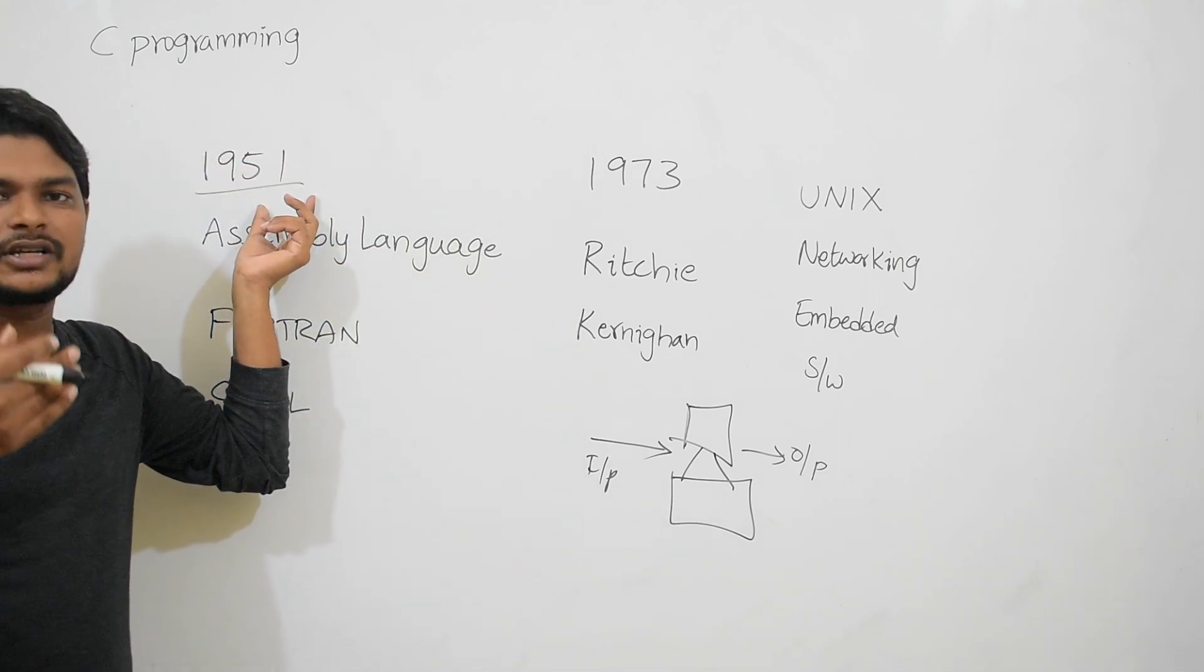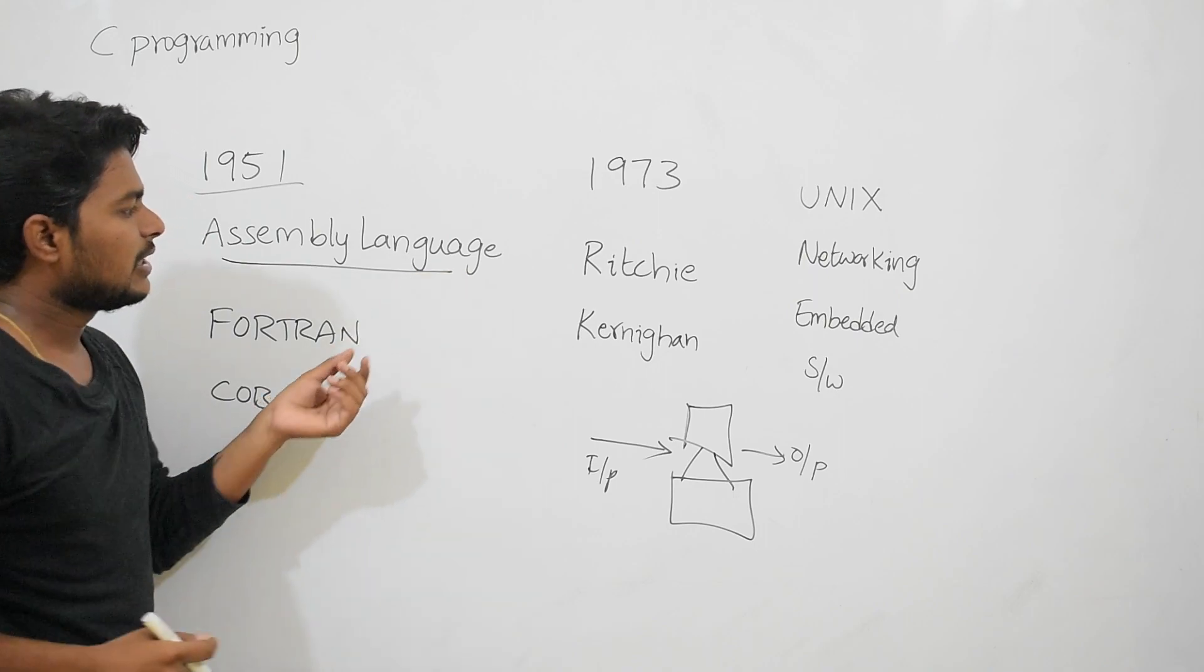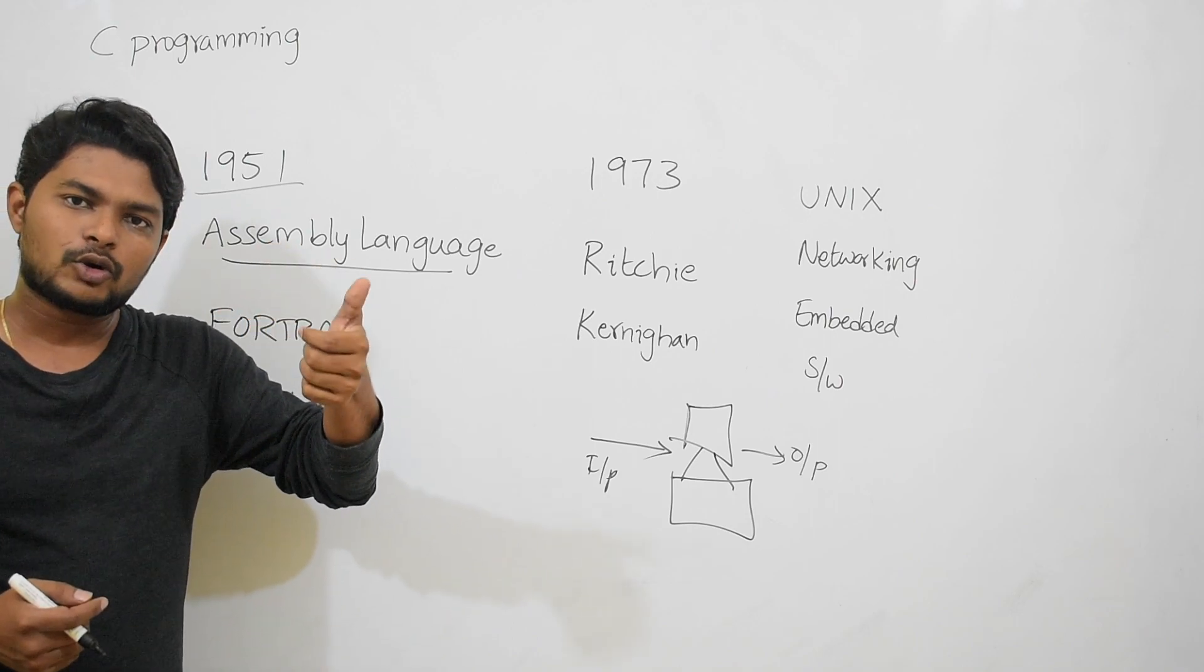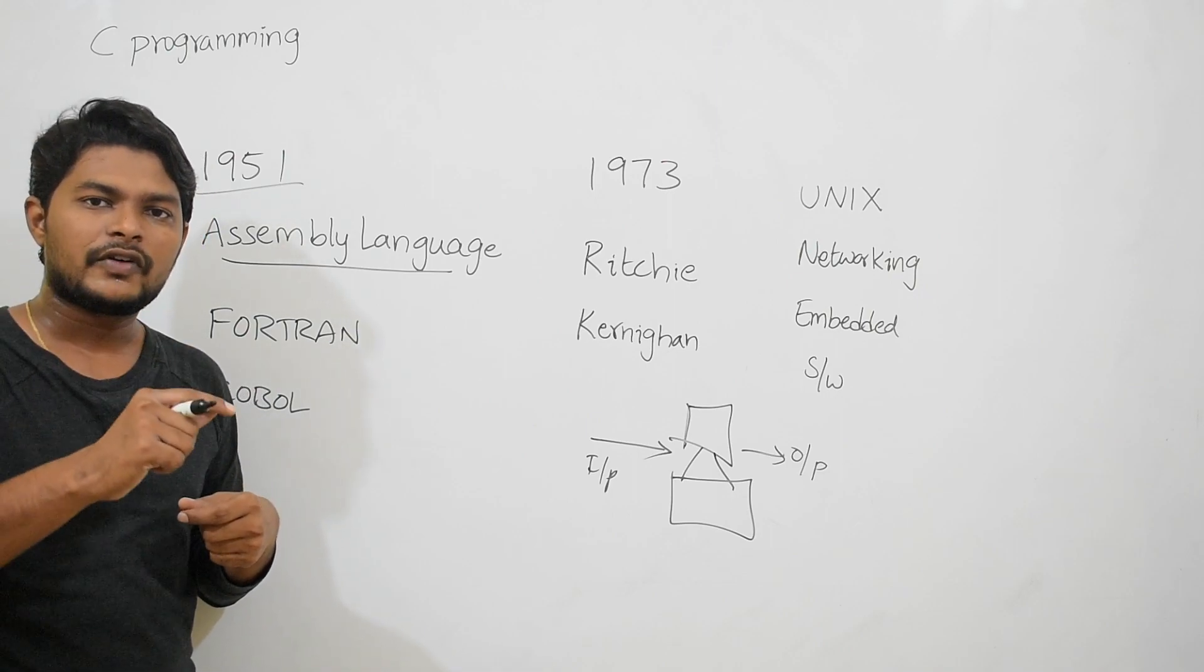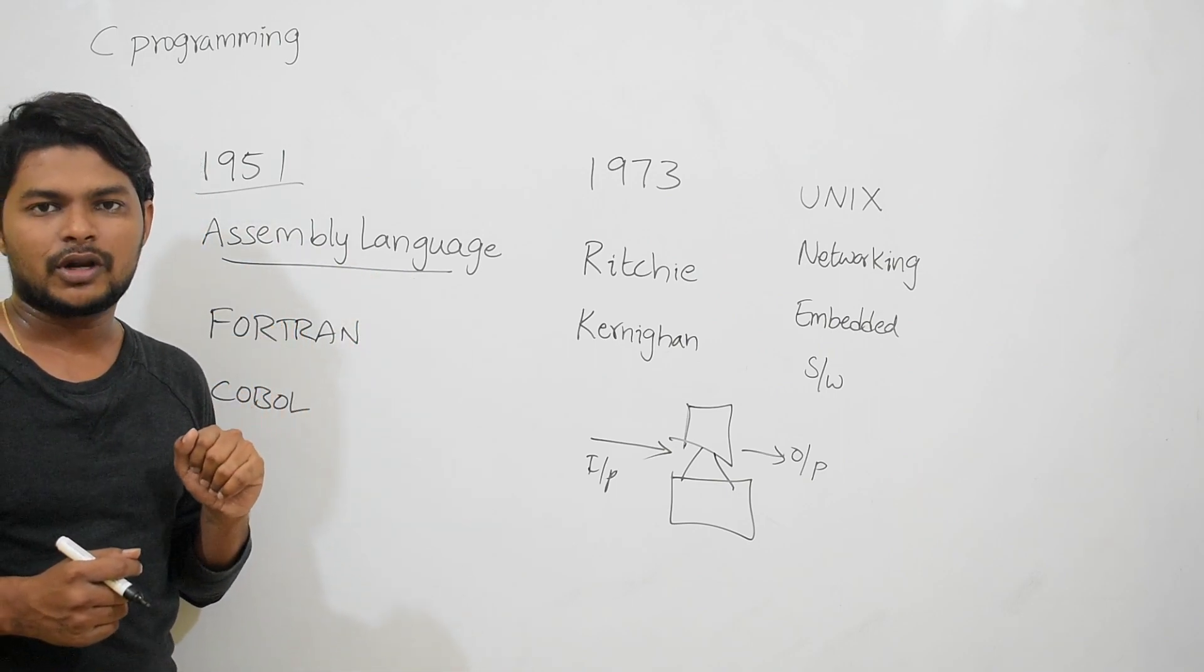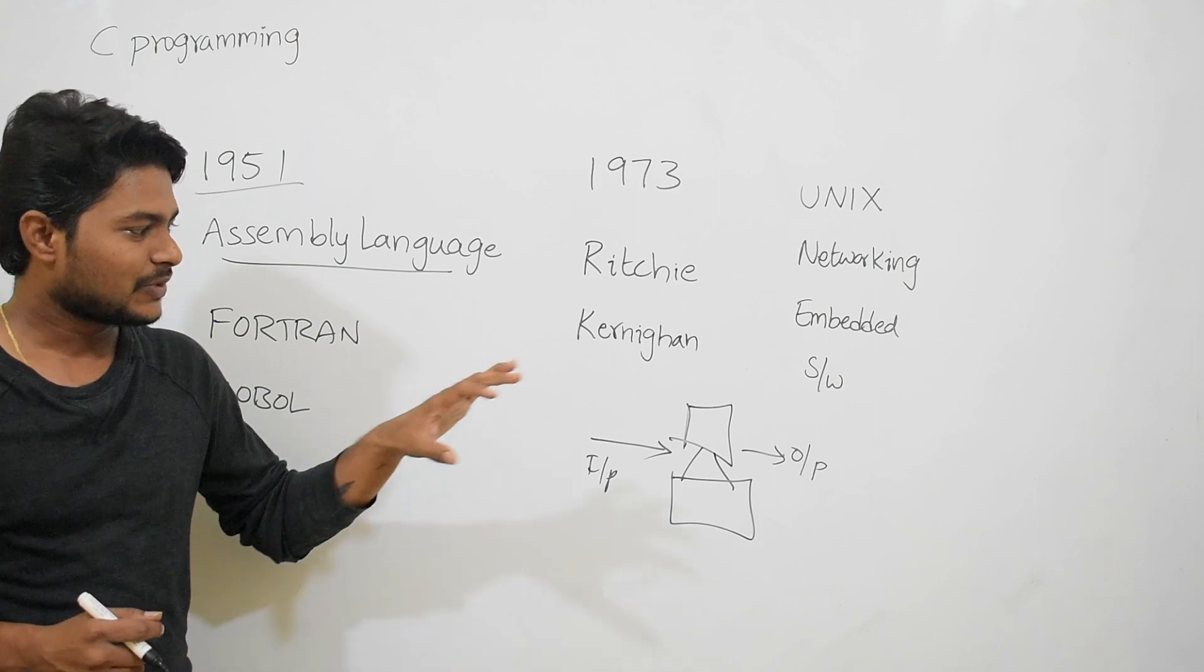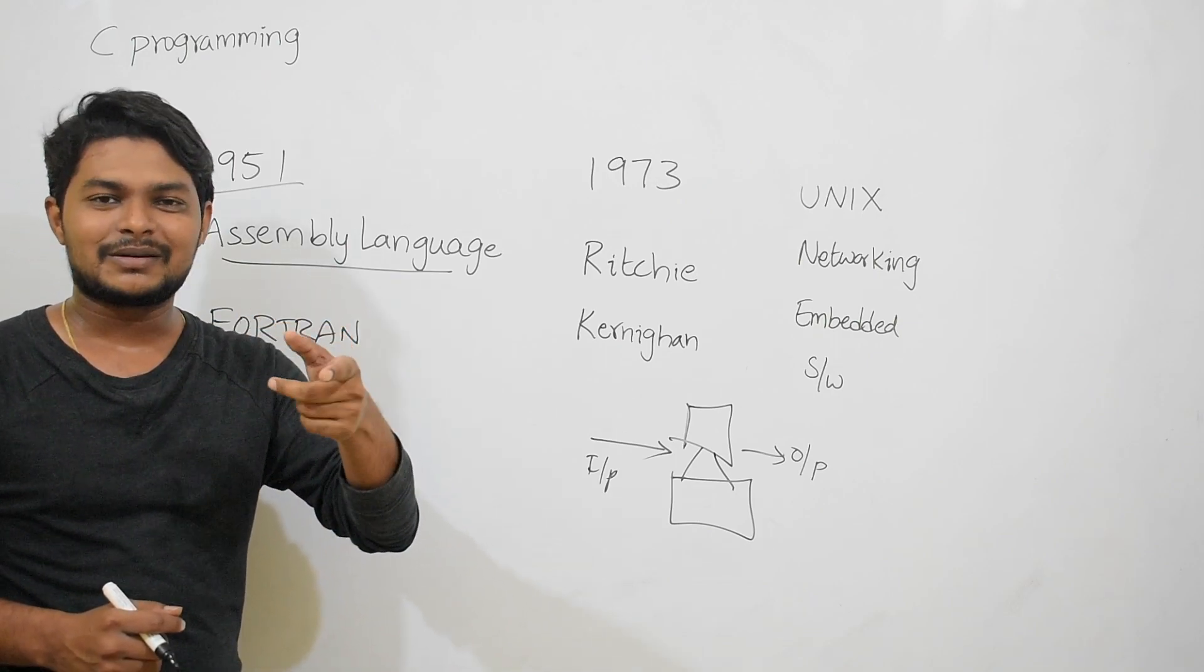The history started with the first generation of computers in 1951. At that time, the only language available was assembly programming language. Assembly programming means you are directly giving instructions at the machine level - microprocessor level instructions to perform operations. For example, in a calculator, you modify registers to perform addition, multiplication, subtraction. But the main disadvantage with assembly programming is learning is very difficult. C programming is very easy compared to assembly language.